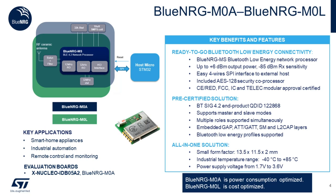The Blue Energy M0A and M0L are Bluetooth Low Energy network coprocessor modules based on the Blue Energy MS. They go up to 6 dBm of output power, compared to other modules in the market that can only achieve 4 dBm, which translates into farther range capabilities. They communicate to the host MCU via SPI interface and are pre-certified modules, which helps reduce the overall certification and engineering cost. The Blue Energy M0A is power consumption optimized, with an internal switching mode power supply and LSE, whereas the Blue Energy M0L is cost optimized, powered by the internal LDO and the internal clock oscillator.